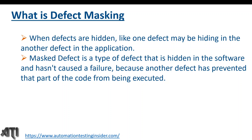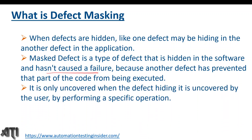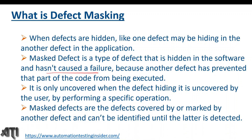A mask defect hasn't caused a failure because another defect has prevented that part of the code from being executed. It is only uncovered when the defect hiding it is fixed and a specific operation is performed. Mask defects are defects covered by another defect and cannot be identified until the masking defect is detected.